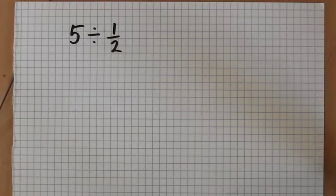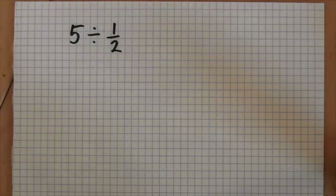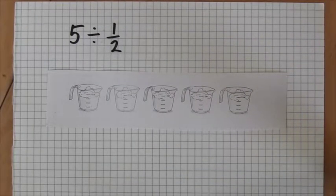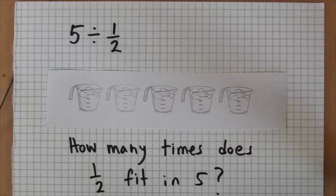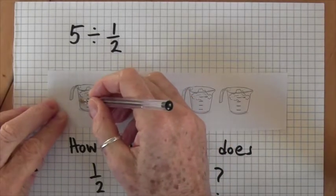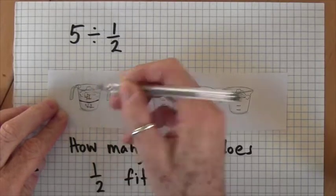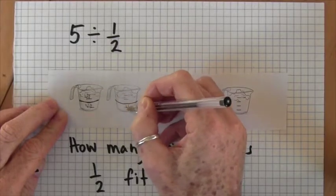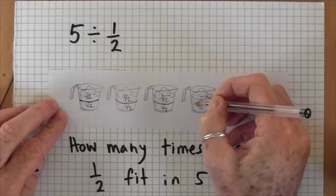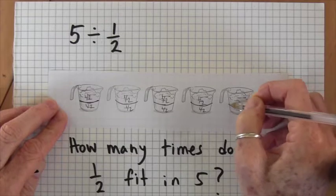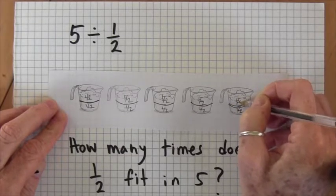Now let's look at a different problem: five divided by one half. This problem is quite challenging to conceptualize as partitive division. Here's a situation where it might arise: I have five cups of flour and a recipe that calls for half a cup. How many batches can I make? I think of each cup, chop it in half — now I have a half cup here and another half cup here — and I do that with each cup, taking a half cup at a time.